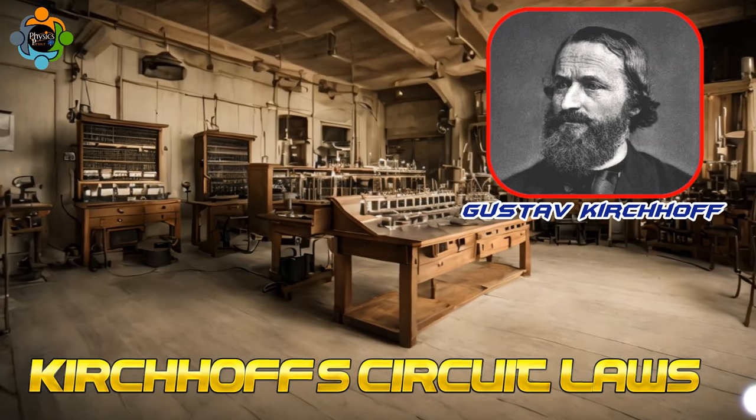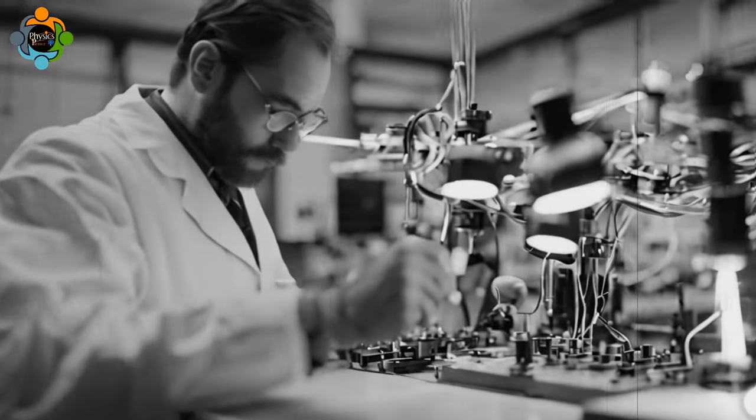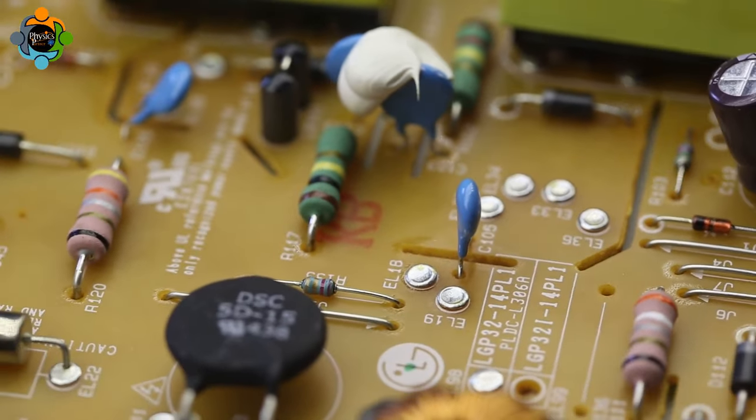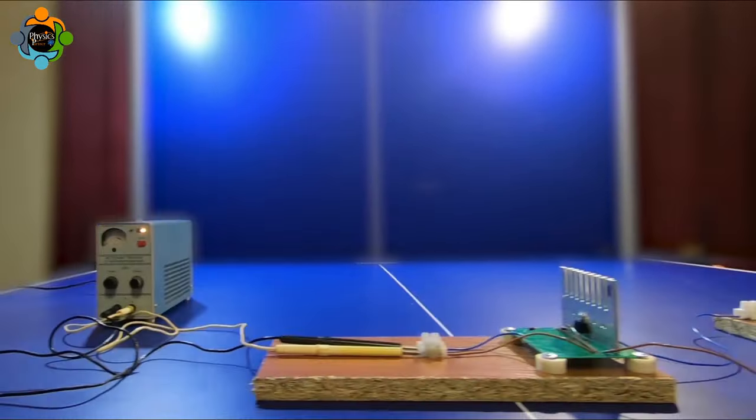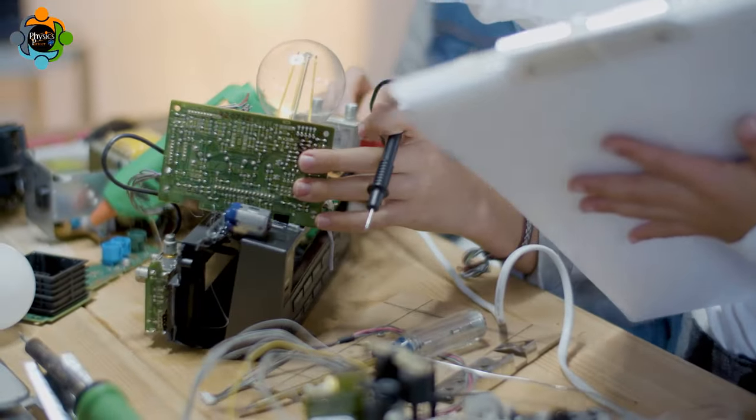Kirchhoff's circuit laws, named after the German physicist Gustav Kirchhoff, were first introduced in the mid-19th century. These laws were developed to describe the behavior of electric circuits and the conservation of energy within them.